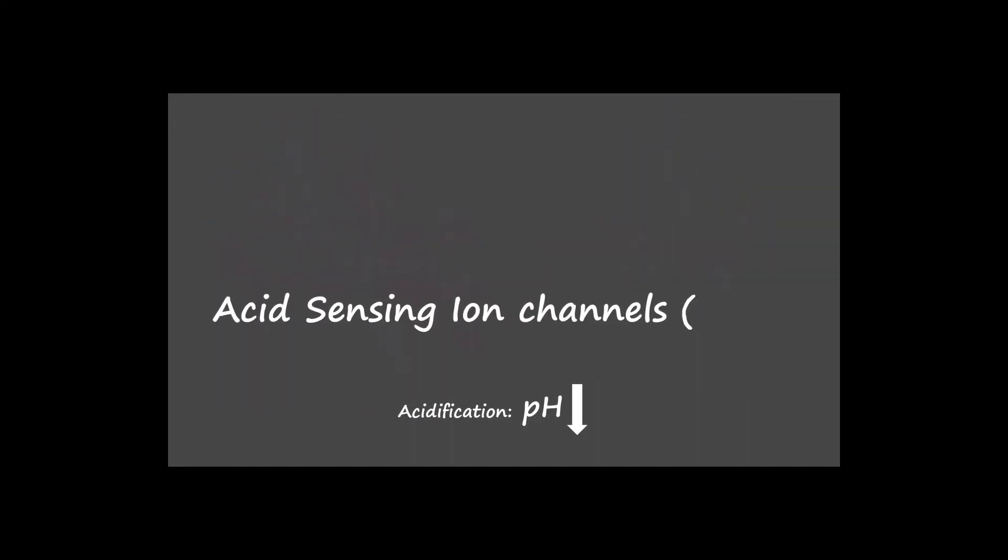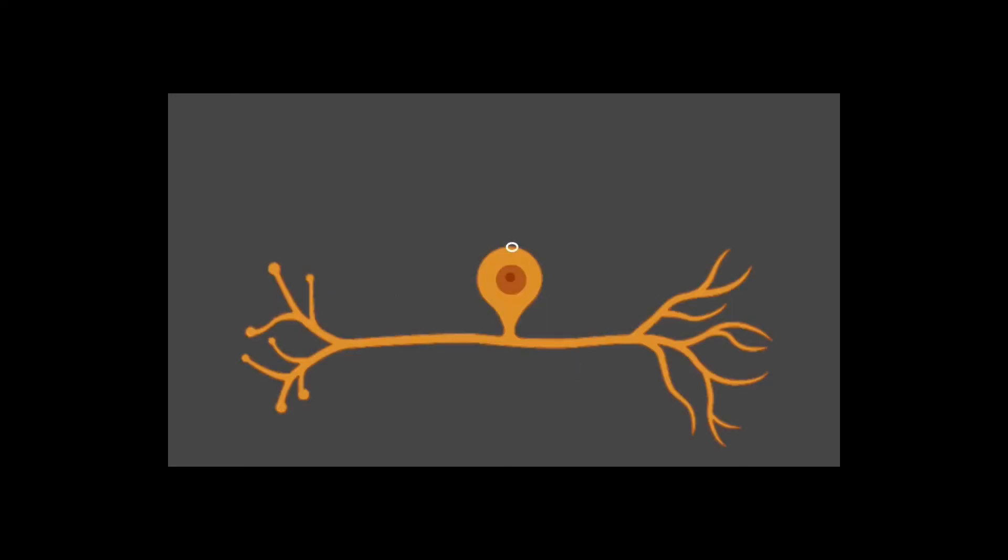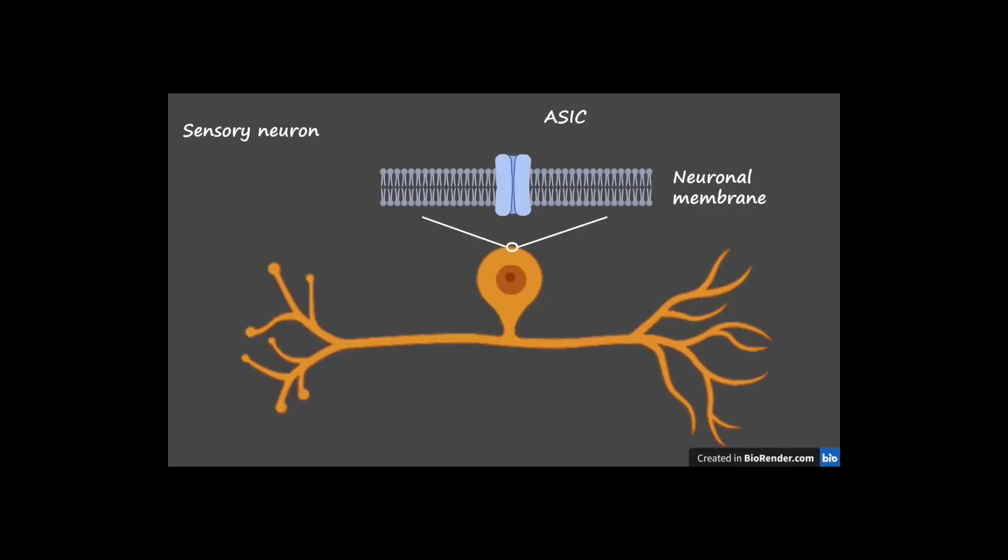Acid sensing ion channels are the main sensors of acidification within the dorsal root ganglia, and they are located at the wrapping layer of the neurons, the membrane.